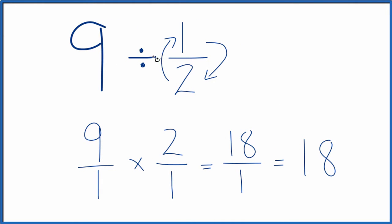So when we divide 9 by 1 half, we end up with 18. If you take 18 and multiply it by 1 half, you end up with 9. So we did this correctly.